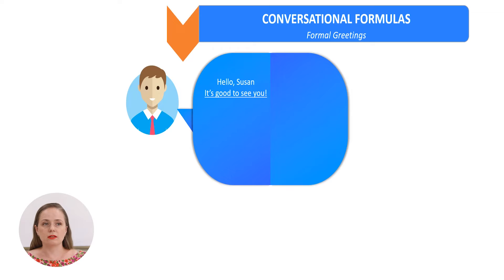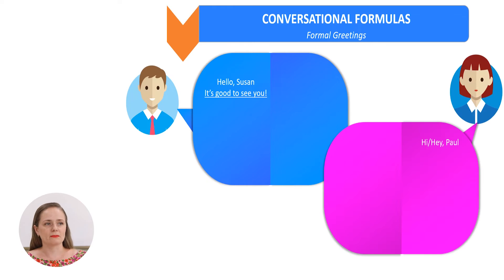Let's see an example of a dialogue of informal conversation. Hello, Susan. It's good to see you. Hi. Hey, Paul. These three formulas, you know already them, yes? So, they are the most familiar and they are the most appropriate in an informal conversation. It's good to see you. This is an expression that you can use with someone that you have not seen for a long time.